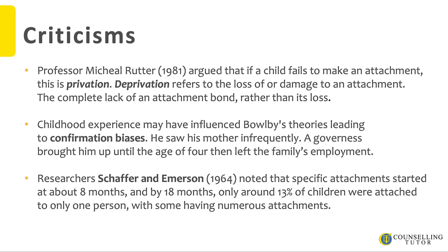In the 1960s, researchers Schaeffer and Emerson — in 1964 to be precise — noted that specific attachments started at about eight months old. By 18 months, only around 30% of children were attached to only one person, with some having numerous attachments. And if we think of children we know — our own children, grandchildren, brothers and sisters — we know that children do actually form multiple attachments.